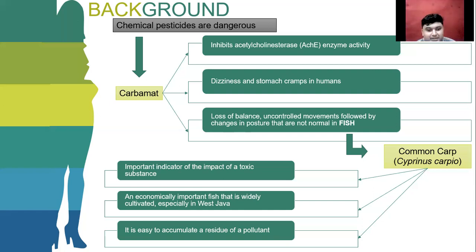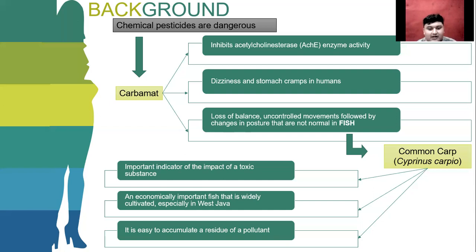Observation of lethal effects is recorded as median lethal concentration, LC50. Previous research by Tofik on the toxicity test of endosulfan insecticides on carp obtained LC50 values of 5.29 mg/L at 24 hours, 3.48 mg/L at 48 hours, 2.78 mg/L at 72 hours, and 2.42 mg/L at 96 hours — showing that LC50 decreases with longer exposure time. Therefore, it is necessary to conduct a toxicity test using LC50-96 hours with other insecticides to measure the LC50-96 value of carbamate insecticide against Cyprinus carpio.